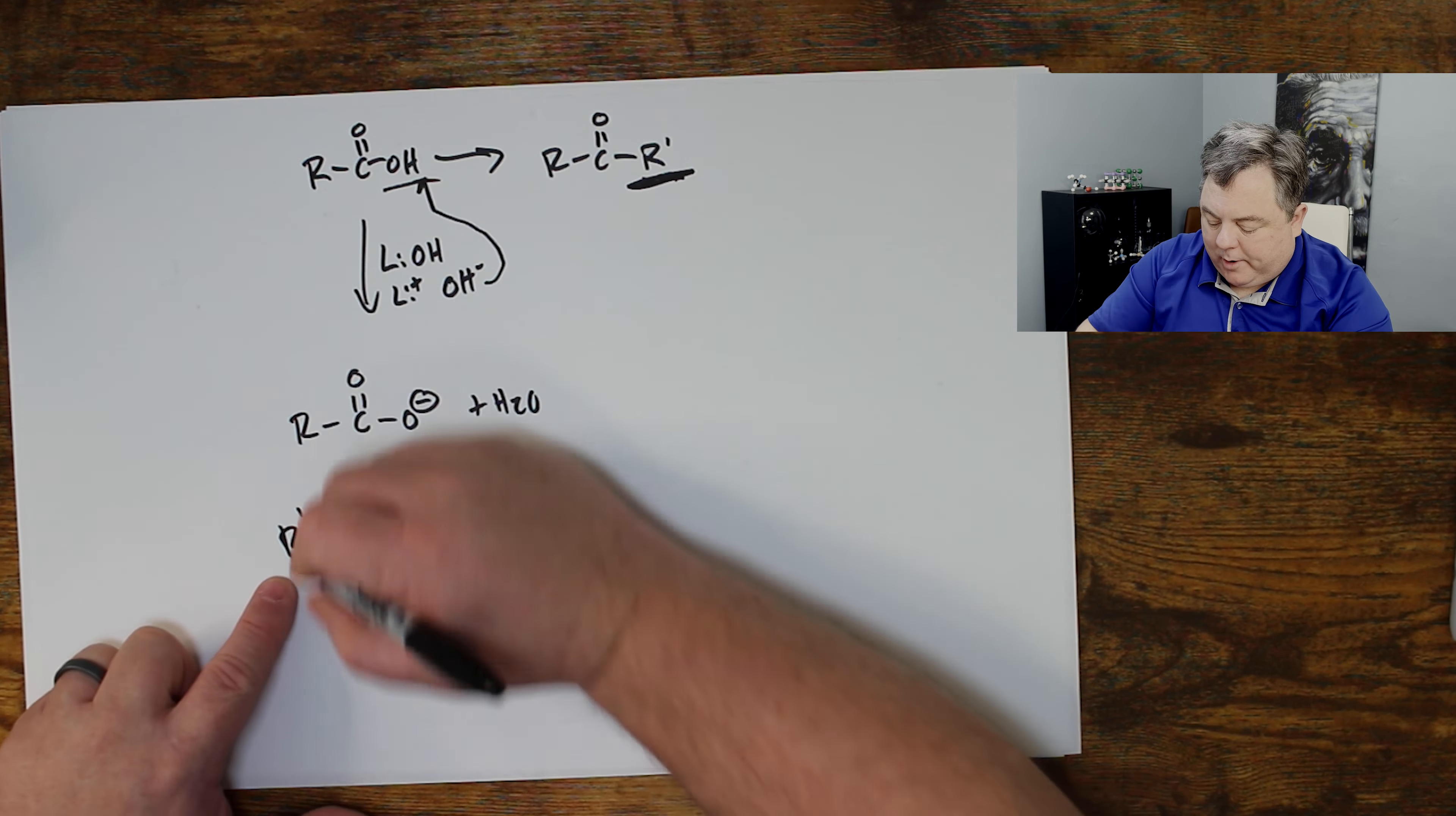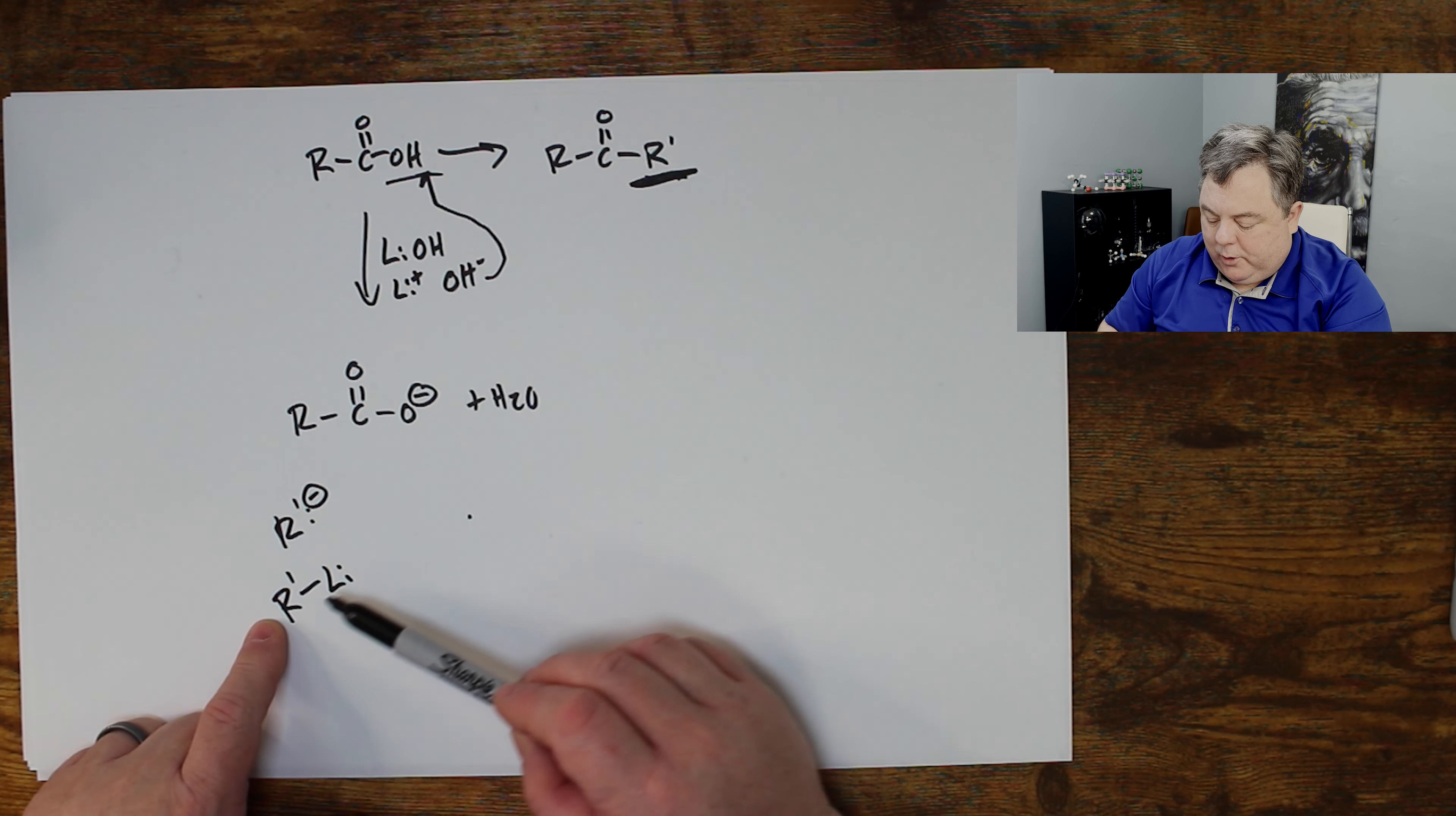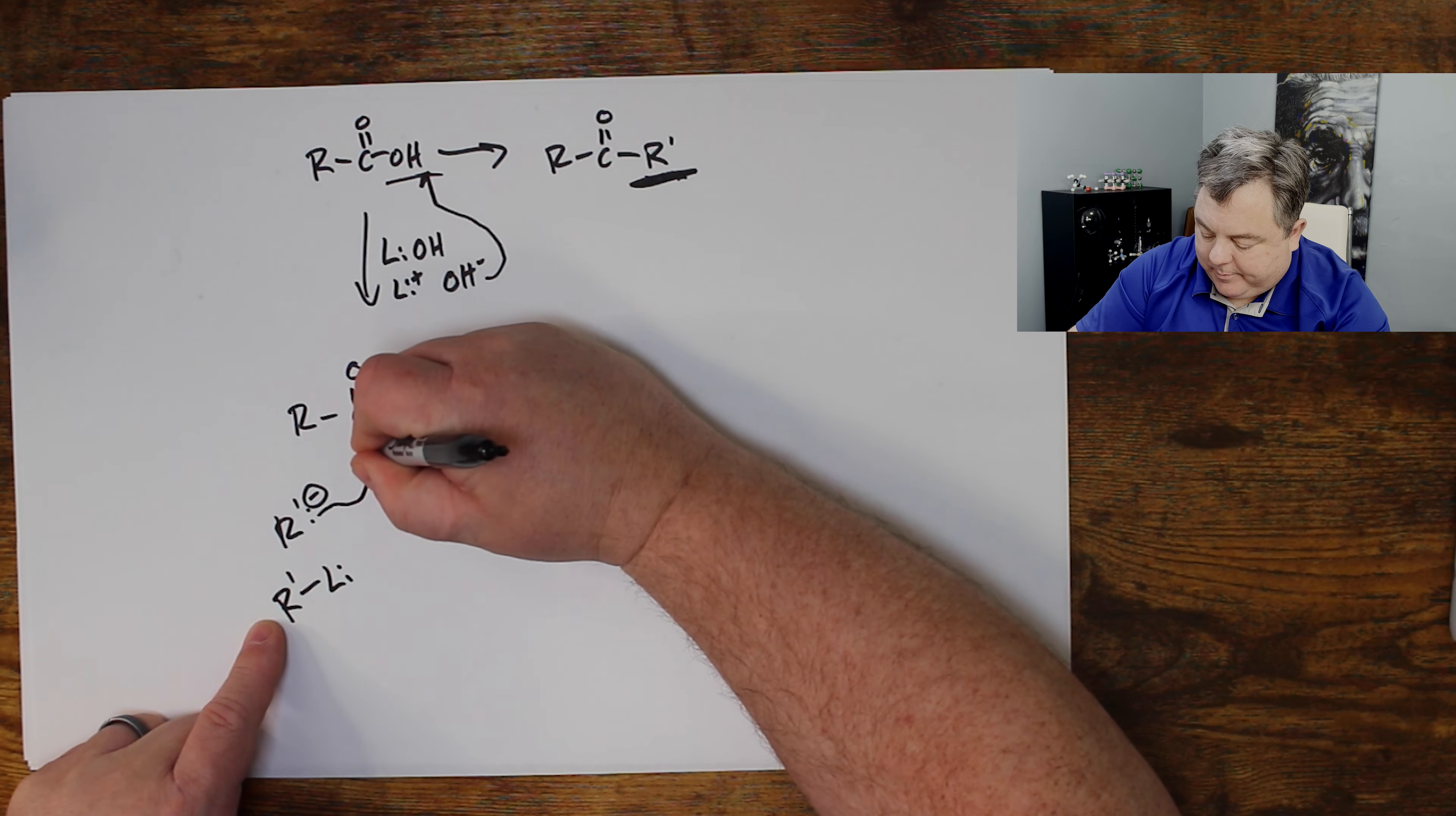The second part of my attack is I need to have R prime attack. So I need a carbon that's aggressive, ready to come attack. One way to get it is to add lithium to it. So that's often what we do. We take a carbon group with a lithium on it, an organolithium reagent. So that's an R prime, a carbon with a negative.